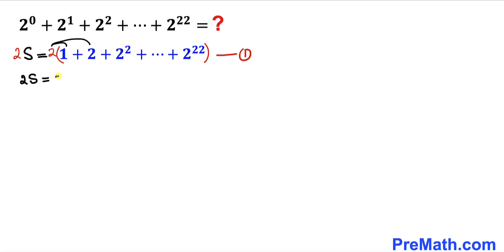So this is going to give us 2 times 1 is 2, plus 2 times 2 is going to be 2^2, plus goes all the way. 2 times 2^22 is going to give us 2^23.